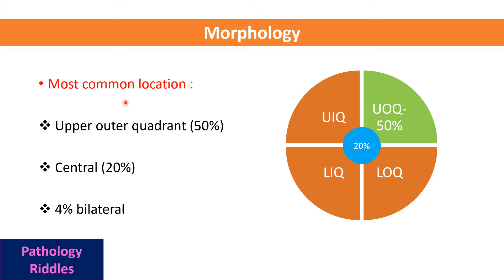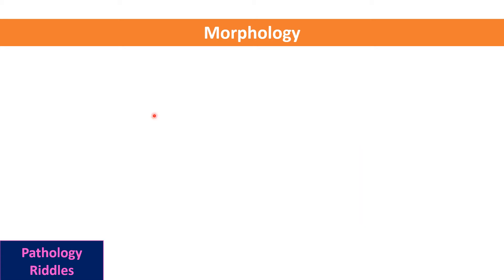The breast is divided into four quadrants: upper outer quadrant, upper inner quadrant, lower inner quadrant, lower outer quadrant, as well as a central region. Most of the breast carcinomas arise in the upper outer quadrant, constituting around 50 percent of all breast carcinomas, and 20 percent arise from the central area.